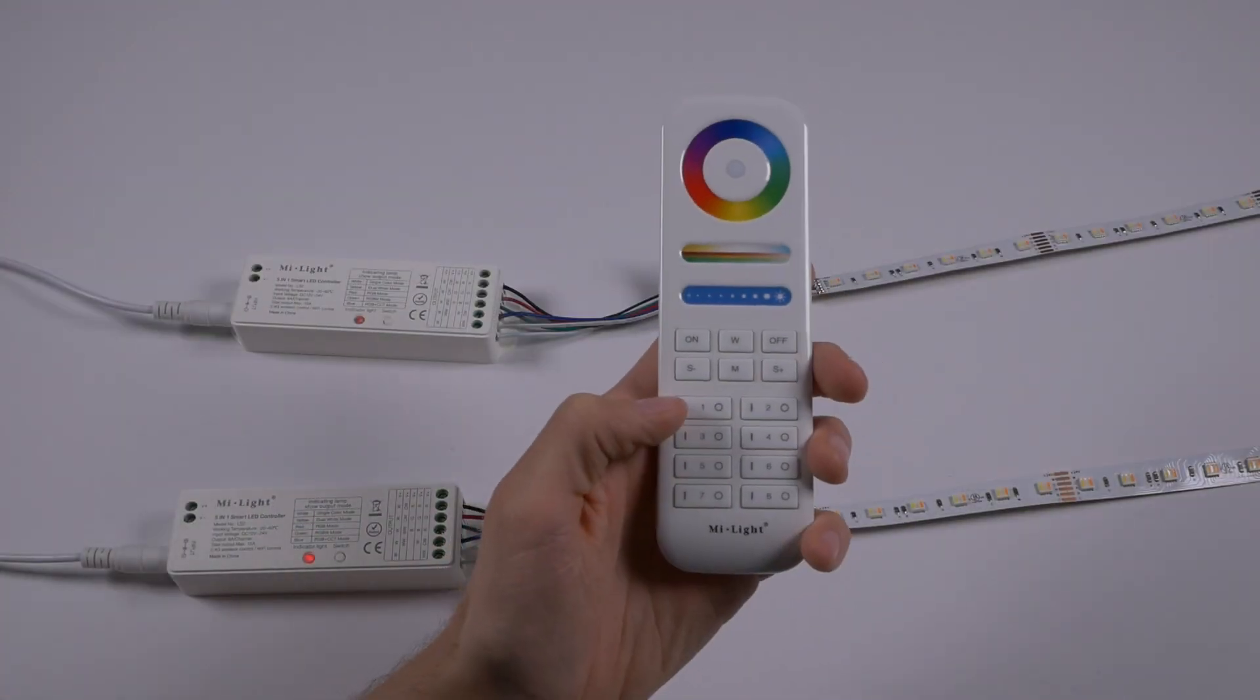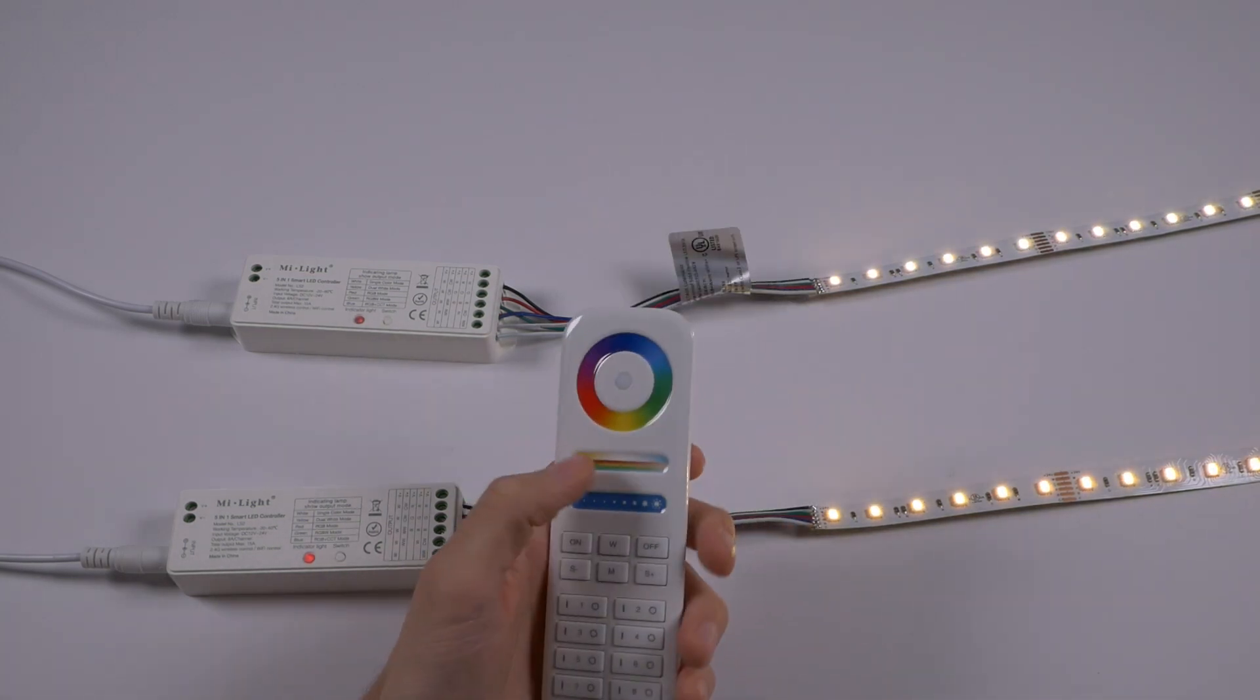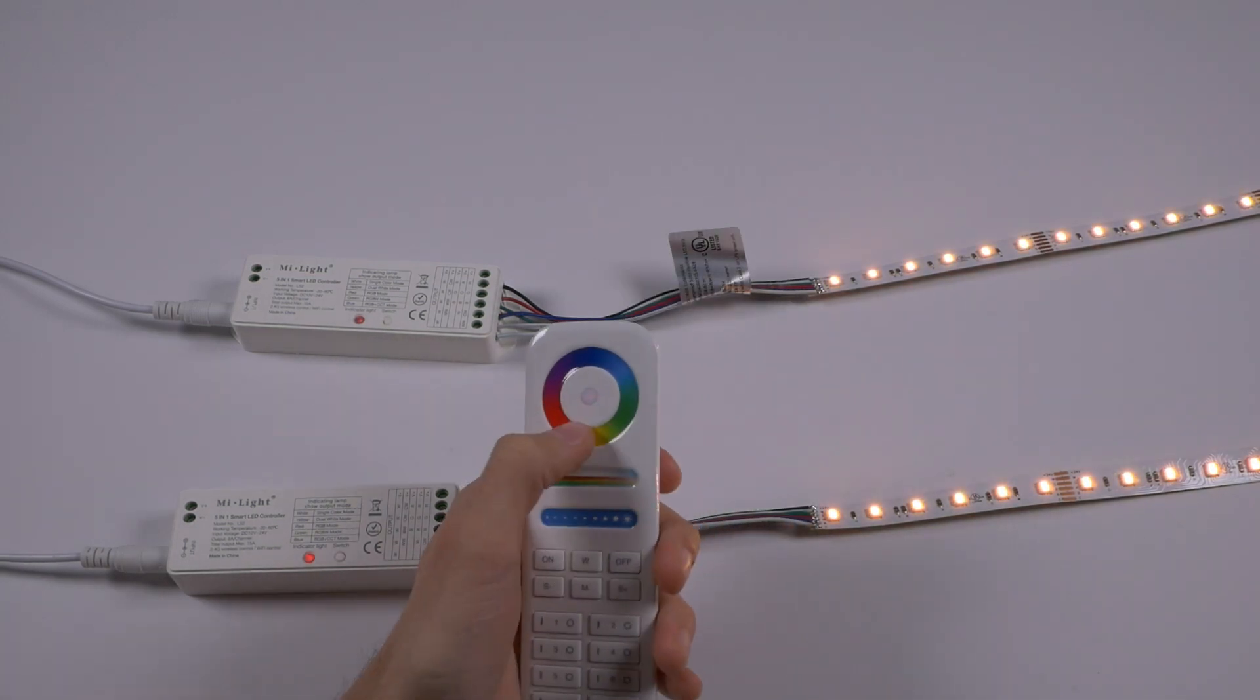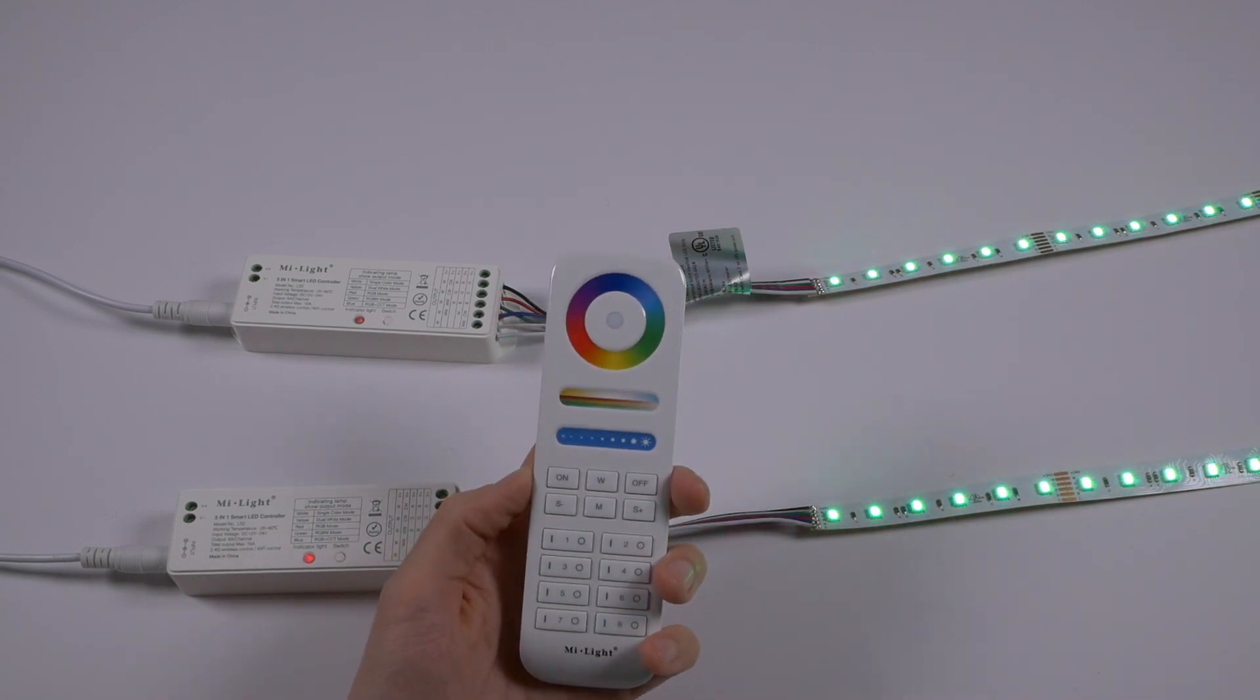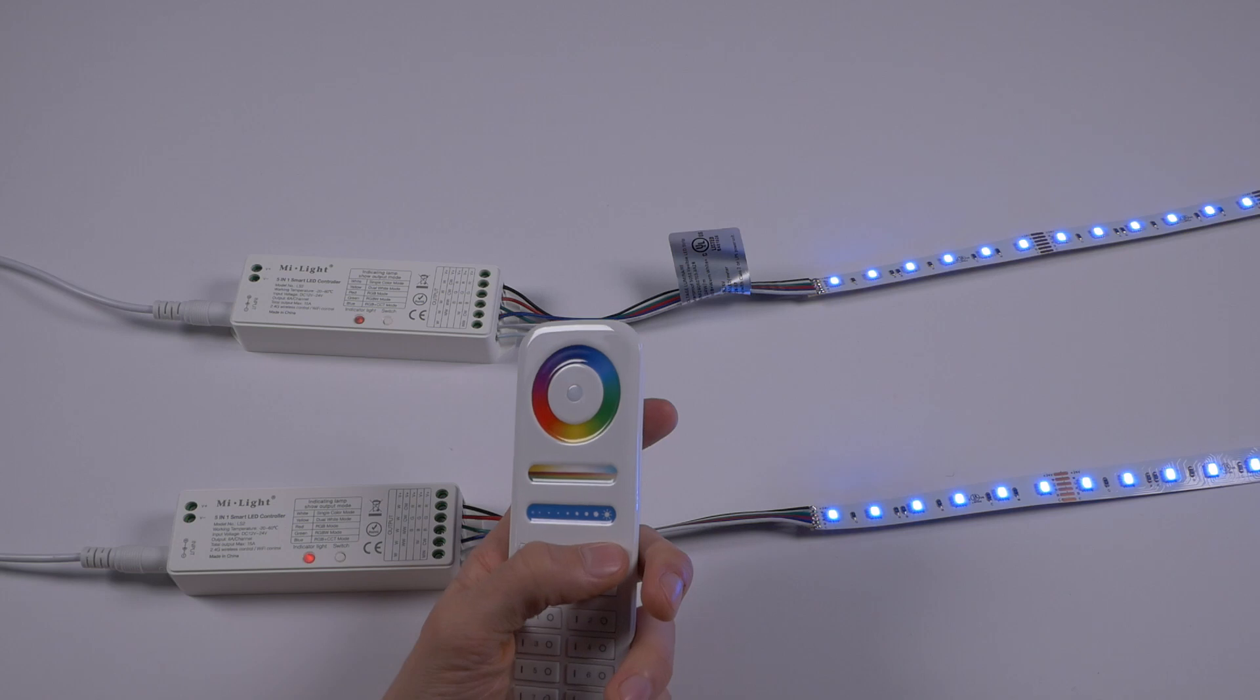You can actually pair more than one light source to a single zone if you need to. Every receiver on that zone will respond together. They even stay in sync with each other automatically in color cycling modes, which no other system on the market does.